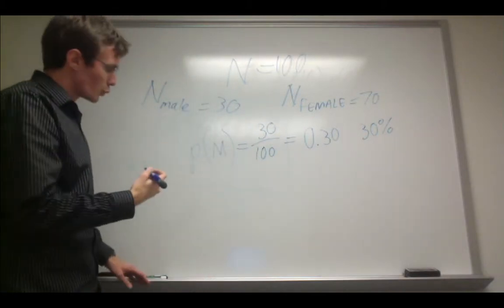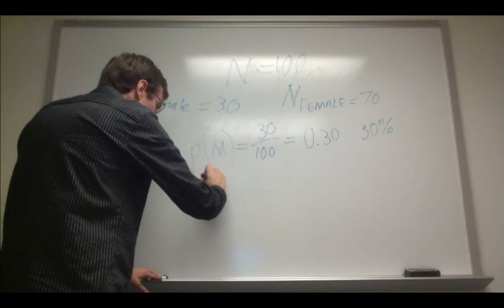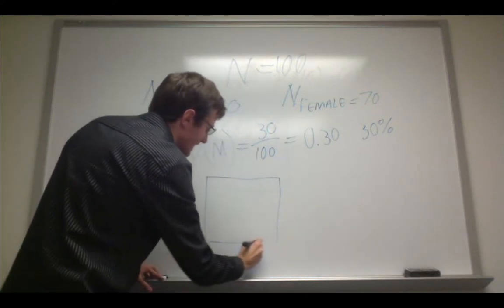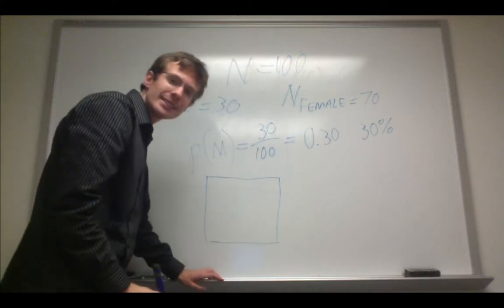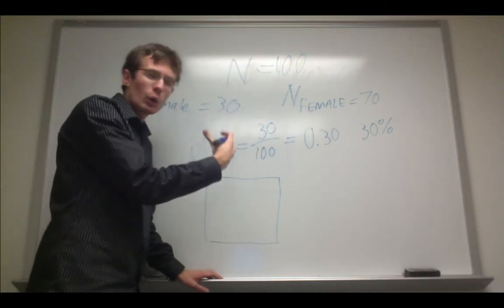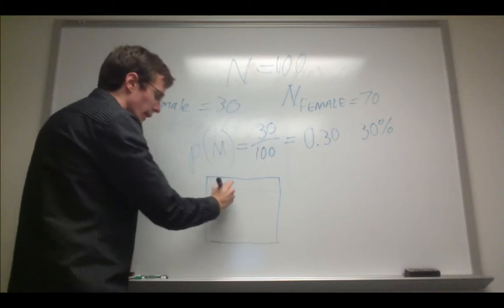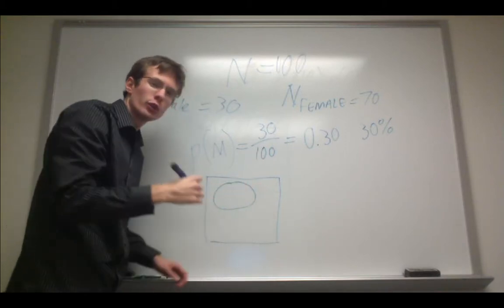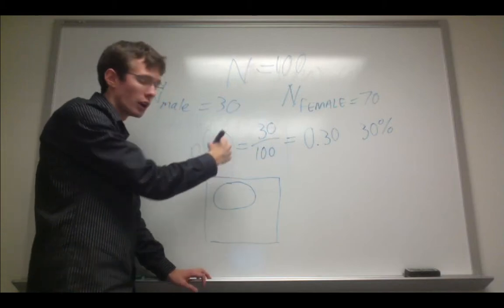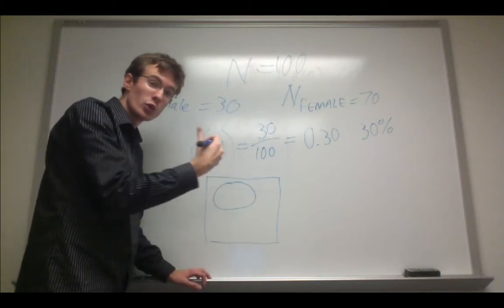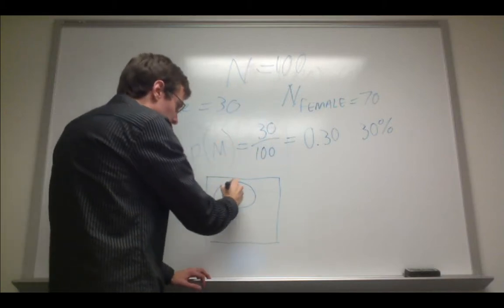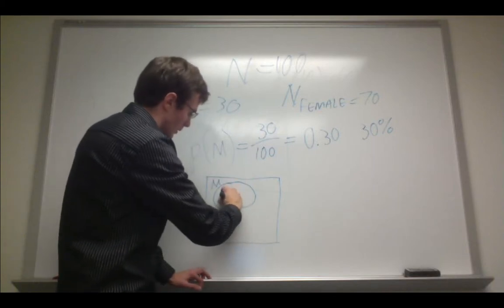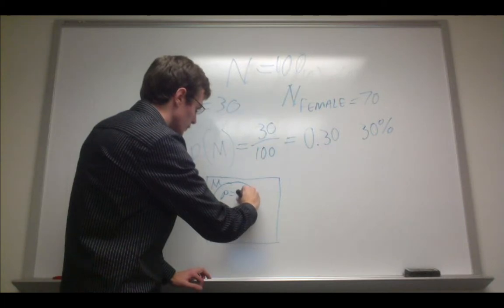Now, if I wanted to represent this in a diagram, I'm going to have this rectangle be my sample space. In other words, representing all of the outcomes of interest. And then I might draw a portion here to represent the proportion of males, the probability of drawing a male at random. So, this is going to be M, and P equals 0.3.